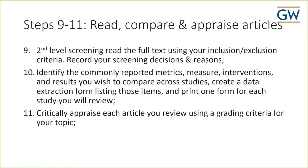The next steps are to read, compare, and appraise the articles for your review. At this second-level screening, you read the full text with your inclusion and exclusion criteria — and you may still at this point, after reading the actual study, decide not to include it. Just record your screening decision and reason for exclusion. Having read 50 to 100 articles in completion, you can identify commonly reported metrics, measures, interventions, and results that you wish to compare across studies. Create a data extraction form listing those items — print one form for each study and pull the numbers out. You'll also need to critically appraise each article using one of a number of grading criteria for your topic.